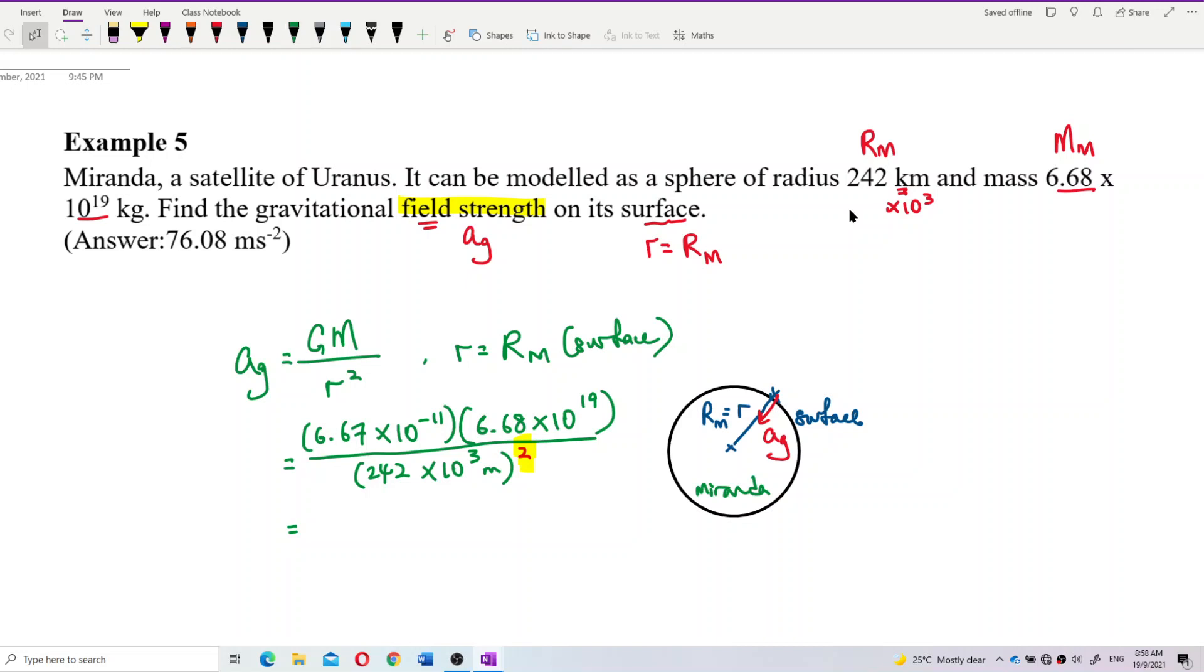So, I got the answer is 0.076. This is a very small value. 0.076. So, I'm sure my answer is correct. This is a wrong answer. The real answer is 0.076. So, hope you make corrections on that. Please help me to make corrections. So, the real answer should be 0.076. That's the real answer.